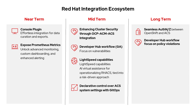In the long term, our goal is seamless authentication and authorization between OpenShift and ACS, creating a more unified security and management experience. We also plan to expand the developer hub workflow to help developers quickly find and fix policy violations within their applications, while taking a risk-driven approach to highlight the most critical attack paths and exposures in their environments.